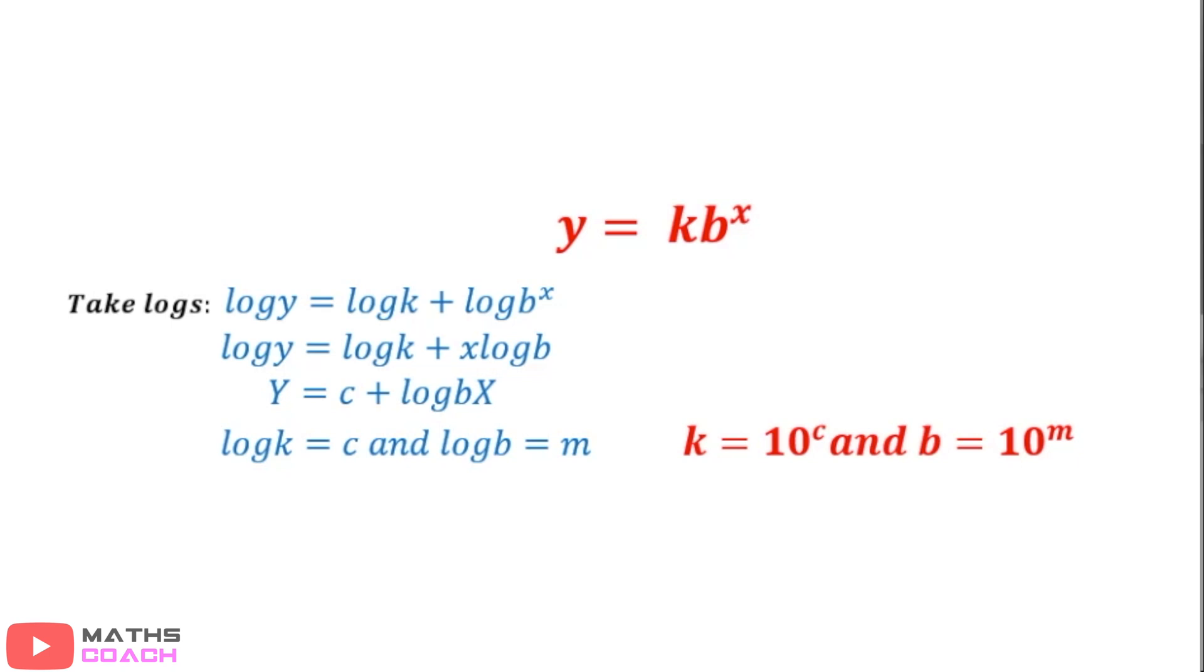And then when we compare that with our codes, we have y equals c, plus log bx. Now in this case, if you preempt it, we're going to have to now undo the k, and undo the b. Now to do that, we have to do 10 to the power for each one. So, we do 10 to the power of c, and 10 to the power of m.